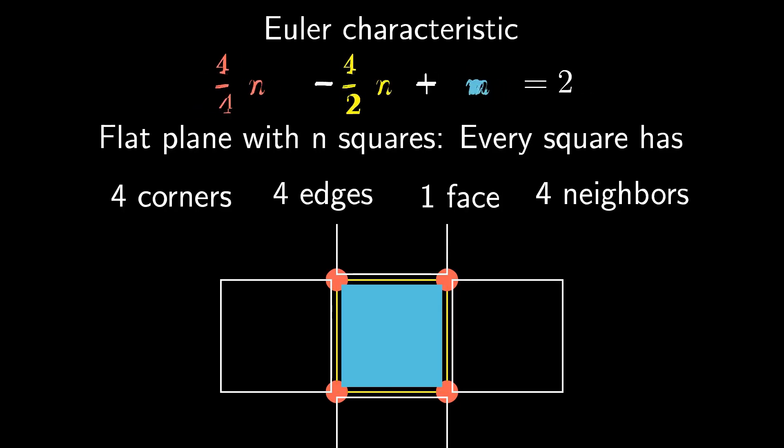When adding this all up, we notice that the result is zero equals two, which is a contradiction. Therefore, a sphere cannot be tessellated with a grid of squares.